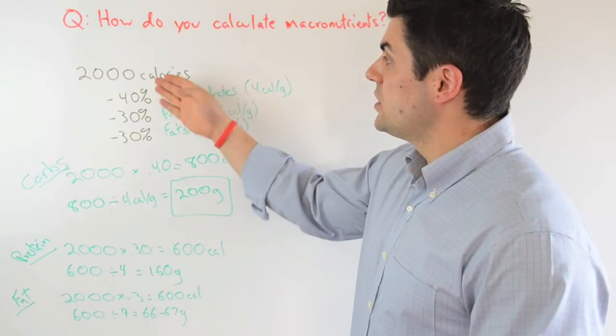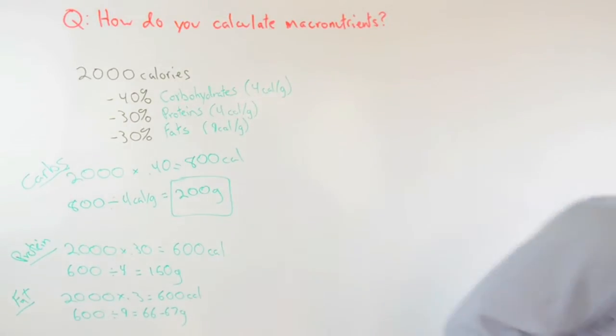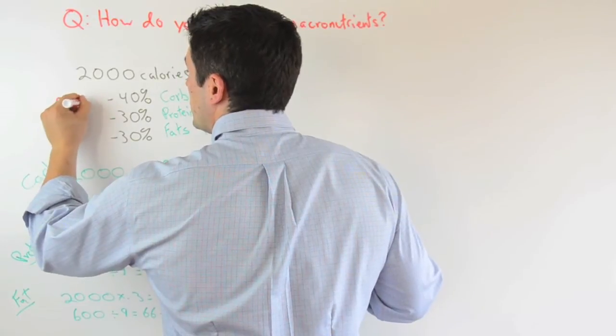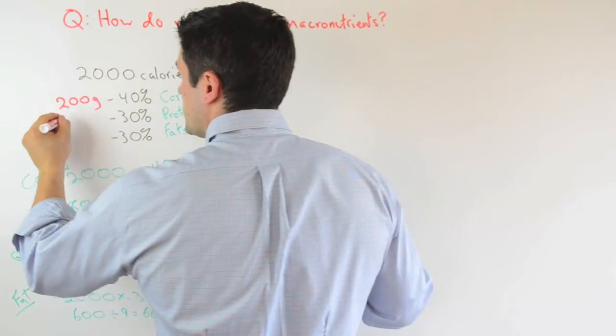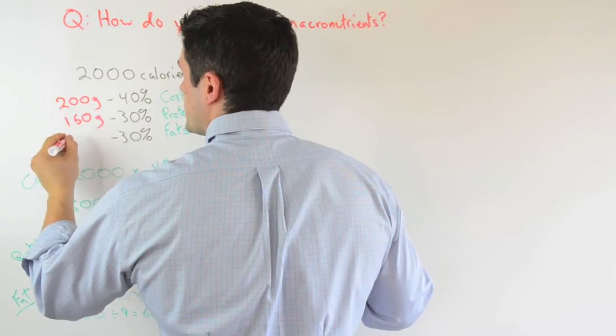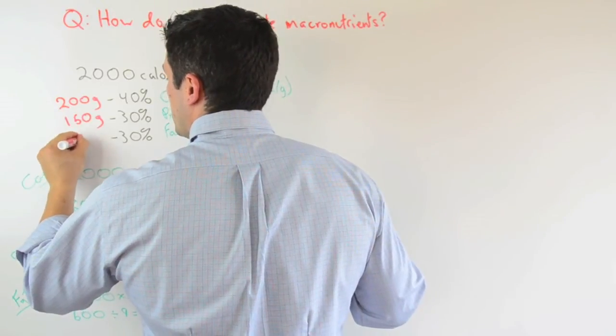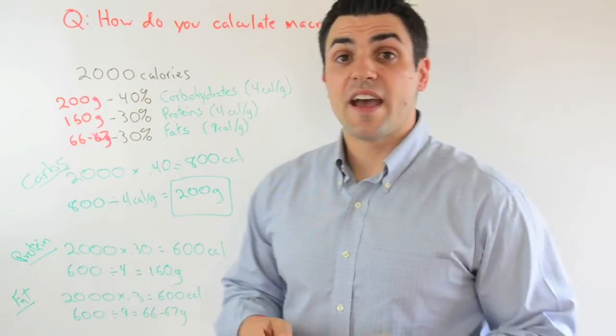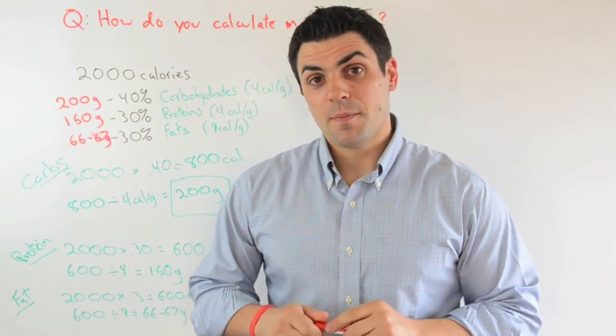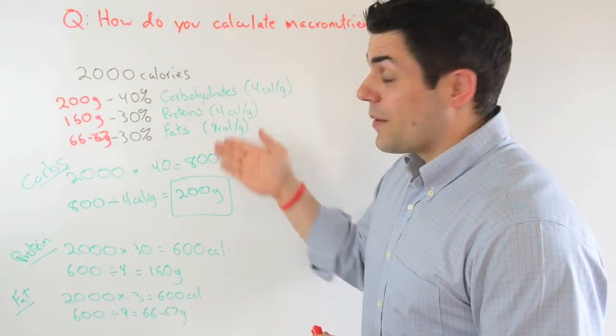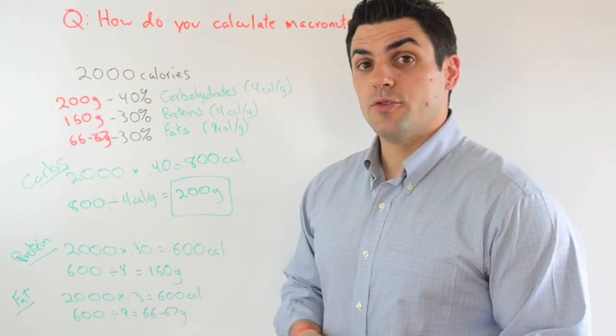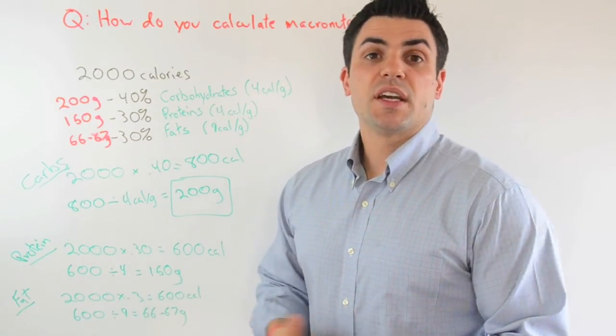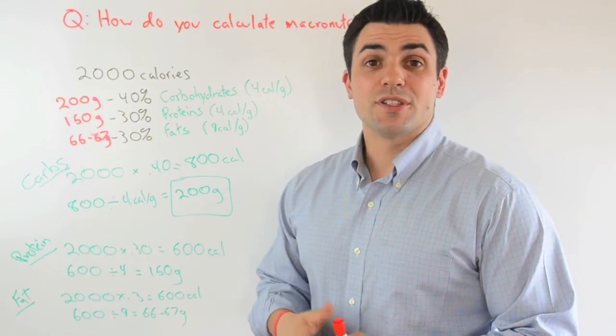So if you wanted to eat 2,000 calories per day, and you were doing 40, 30, 30, you would end up eating 200 grams of carbs, 150 grams of protein, and say 66 or 67 grams of fat per day. So that's what macronutrients are, the major macronutrients that you want to calculate. That's how you go about calculating them based on the percentages that you want from each of the macronutrients in your diet.